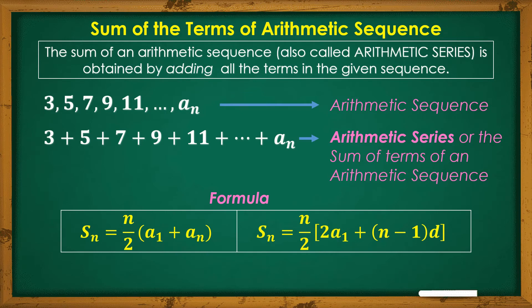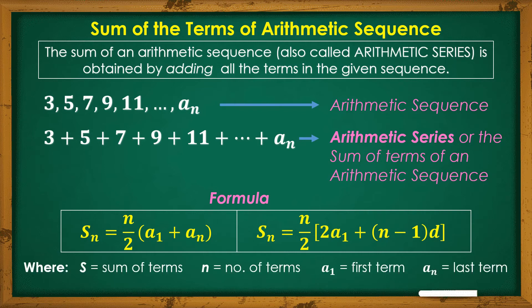We have two formulas. First: S sub N equals N over 2 times the quantity A sub 1 plus A sub N. Or second: S sub N equals N over 2 times the quantity 2 times A sub 1 plus N minus 1 times D. Here, S is the sum of terms, N is the number of terms, A sub 1 is the first term, A sub N is the last term, and D is the common difference.